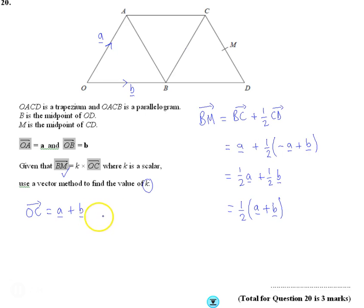And then we can see that if you compare these, BM is, well, if you compare these two things, the only difference is that you would have to multiply this by half to get the same as this. So k is equal to half, and that's it.